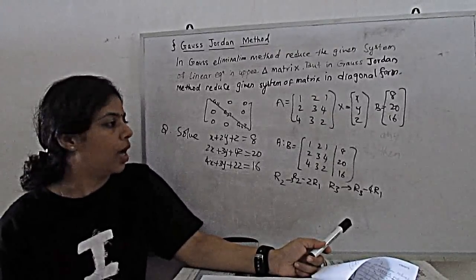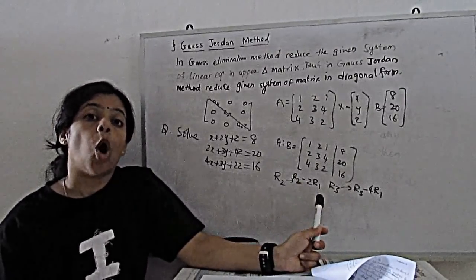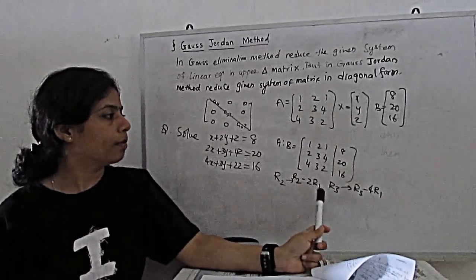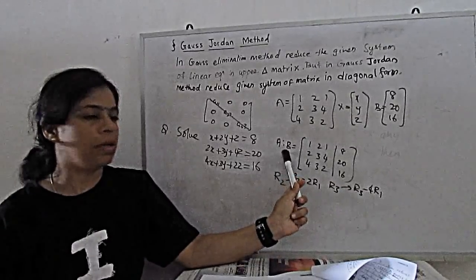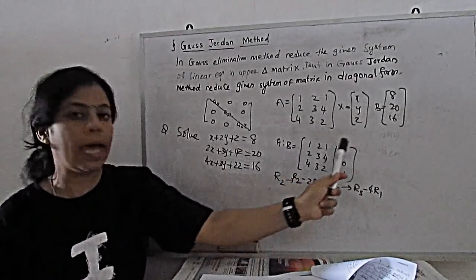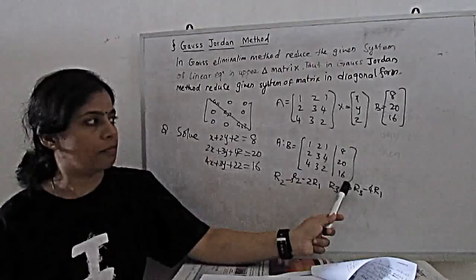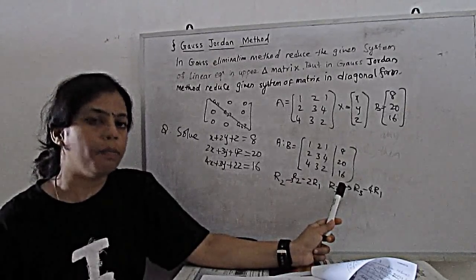Next step, we have to arrange into augmented form. So augmented form is A dot B, A matrix. Then one column we have to introduce with the help of B matrix.